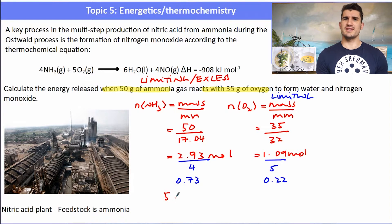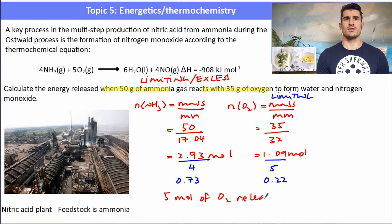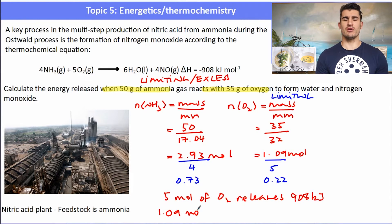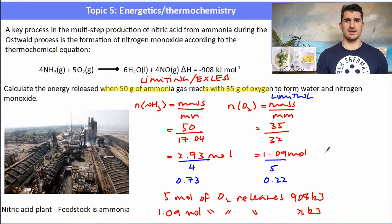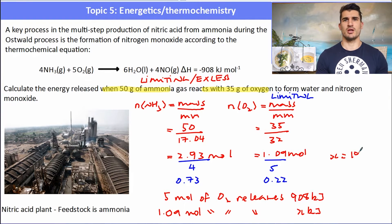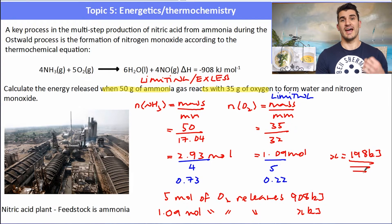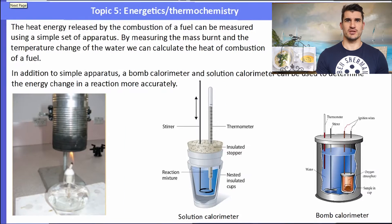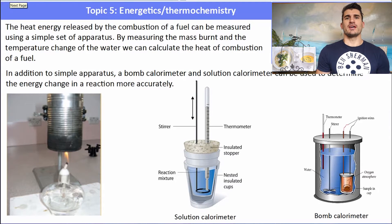Now I set up a ratio using the limiting reagent, oxygen: 5 moles of oxygen releases 908 kilojoules. I have 1.09 moles, so 1.09 moles releases X kilojoules. Cross-multiplying and solving for X gives 198 kilojoules released. This energy is released because it is an exothermic reaction.